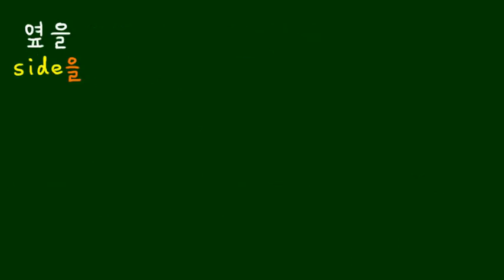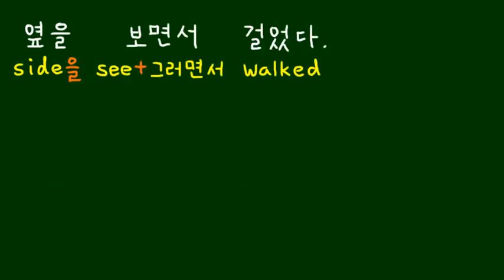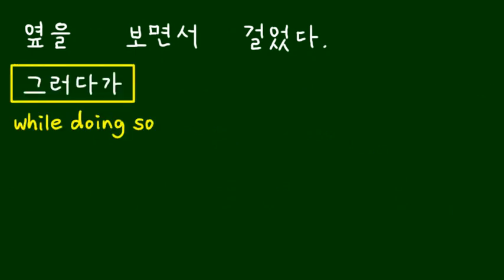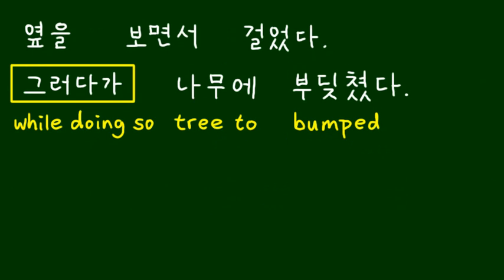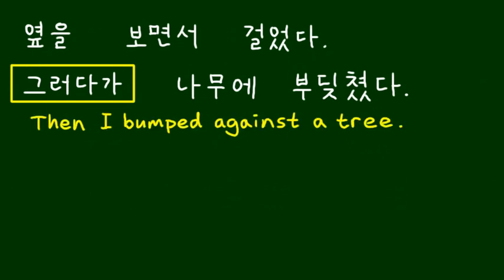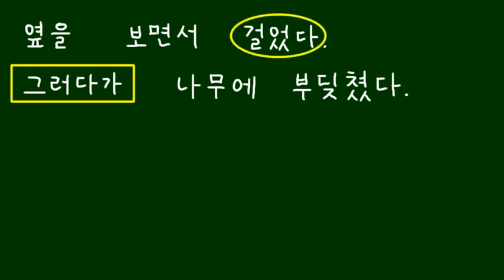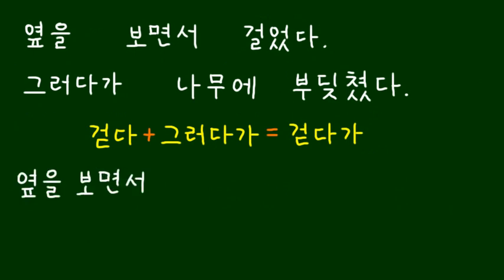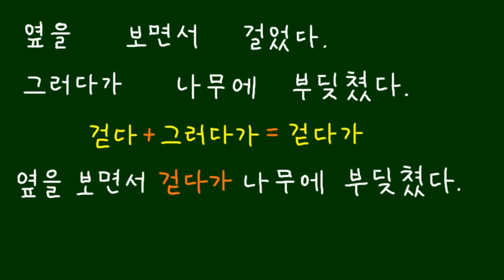옆을 보면서 걸었다. 그러다가 나무에 부딪혔다. 걸었다 and 그러다가 → 걷다가. 옆을 보면서 걷다가 나무에 부딪혔다.